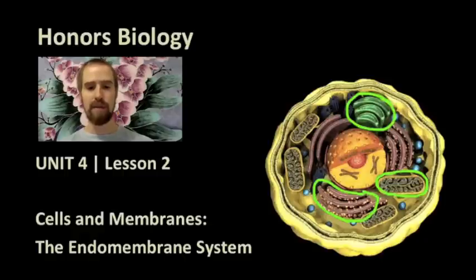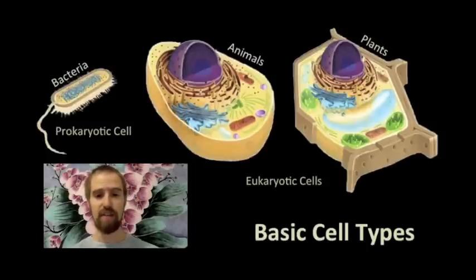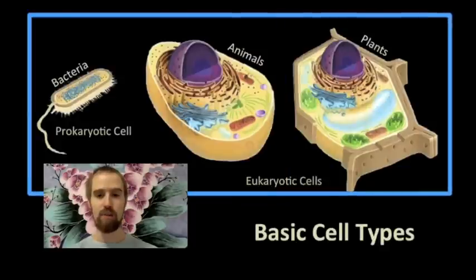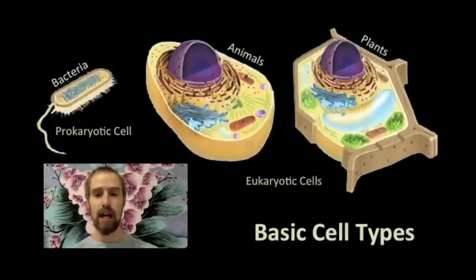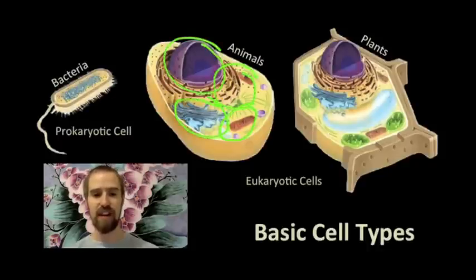There is also a really important membrane that surrounds every cell, and we're going to talk about that a bit today as well. In our previous video, we talked about some of the basic cell types, prokaryotic cells and eukaryotic cells. Here we see those examples again. As you may recall, there are some pretty significant differences between prokaryotes and eukaryotes. In particular, you might notice that these eukaryotic cells have all kinds of stuff inside of them, whereas the prokaryotic cell has very little by comparison. These structures we see inside the eukaryotic cells are called organelles, which means little organs.